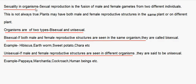Sexuality in Organisms: Sexual reproduction is generally the fusion of male and female gametes from two different individuals, but this is not always true. Plants may have both male and female reproductive structures in the same plant or on different plants. Organisms are of two types: bisexual and unisexual.